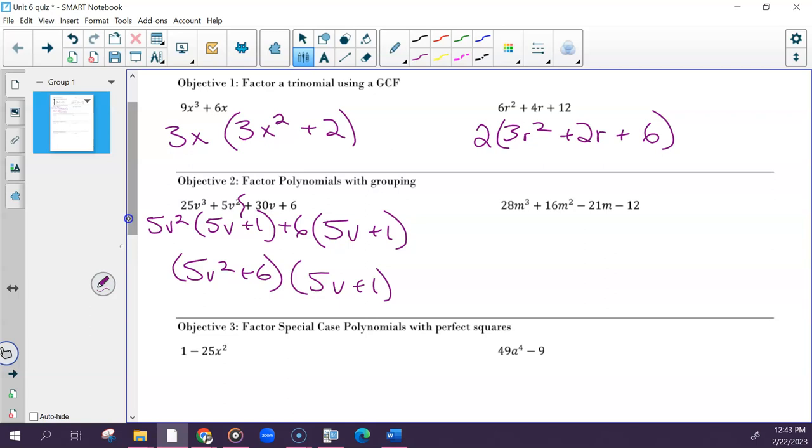The next one was some more. So GCF of these first two would be 4m squared, leaving you with 7m plus 4. And then on the other side, you need to divide by negative 3, which will leave you with positive 7m plus 4. Some of you were picking out positive 3, which is why you still have negatives inside, so be careful with that. So then your factors would be 4m squared minus 3, and 7m plus 4. Questions on either of those.